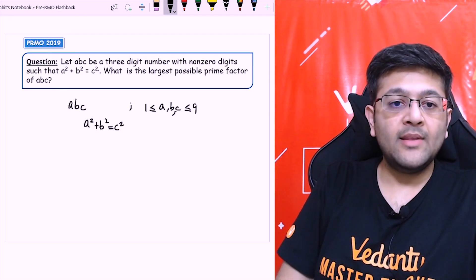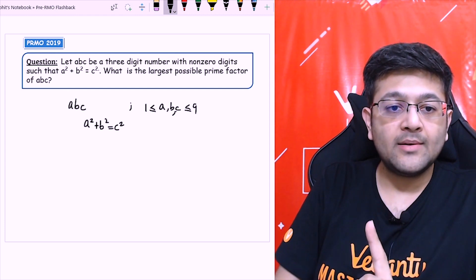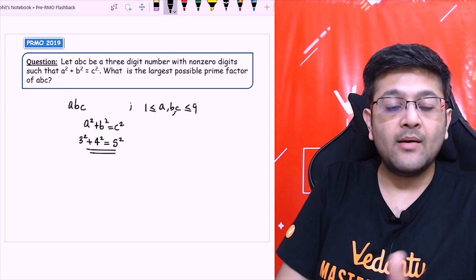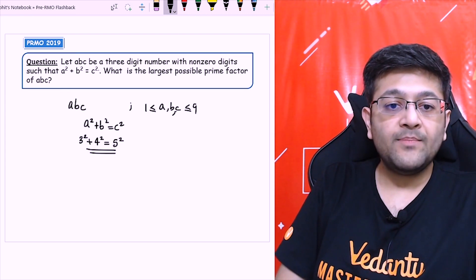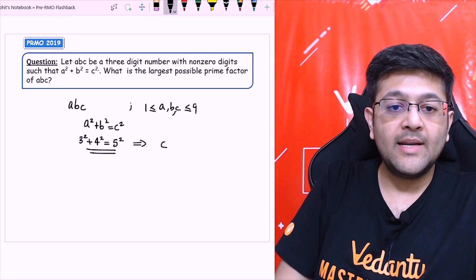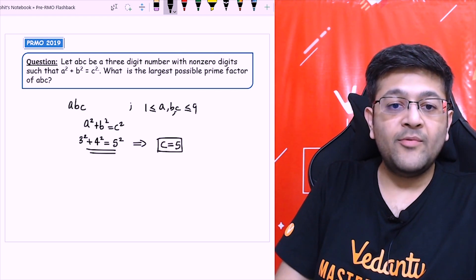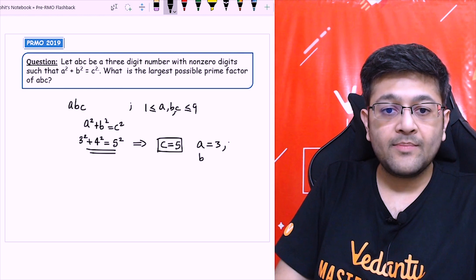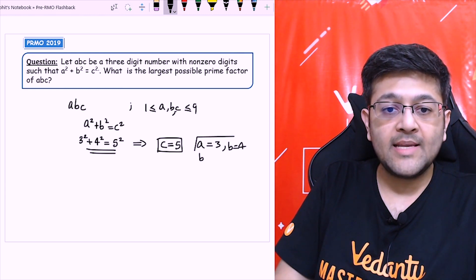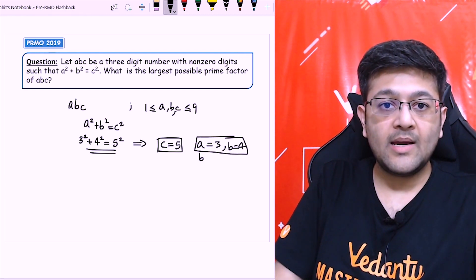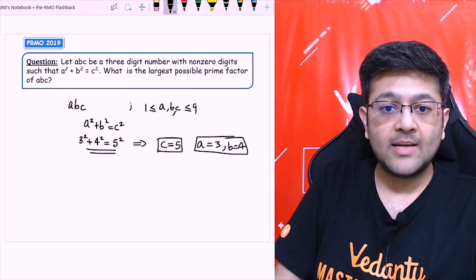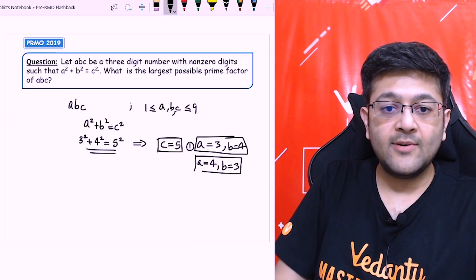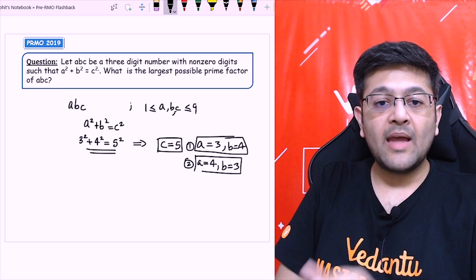Actually, from 1 to 9, there is only one Pythagorean triplet for integers, which is 3 square plus 4 square is equal to 5 square. I hope everybody understands this thing. This gives me that the C value must be 5 only. C has to be 5. Whereas, out of A and B, there could be two cases that A is 3 and B is 4, either this set, or I can say that A is 4 and B is 3. So these are the two cases, first case and second case. So accordingly, I will have two numbers.